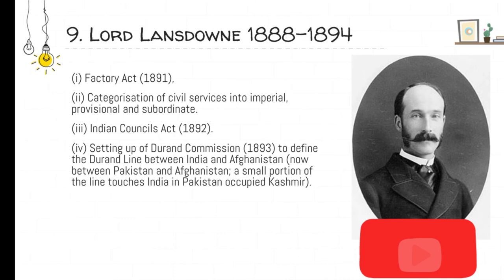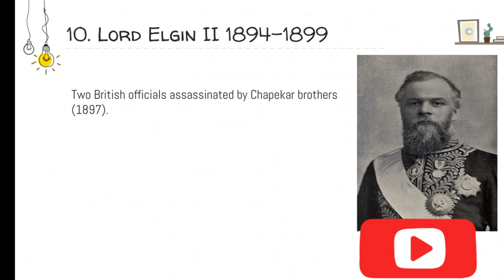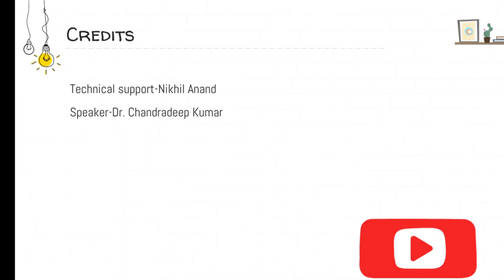Lord Elgin II served from 1894 to 1899. Not much was done during this period; notable was the assassination of two British officials by the Chapecker brothers. This winds up Part 1 of the Viceroys lecture.